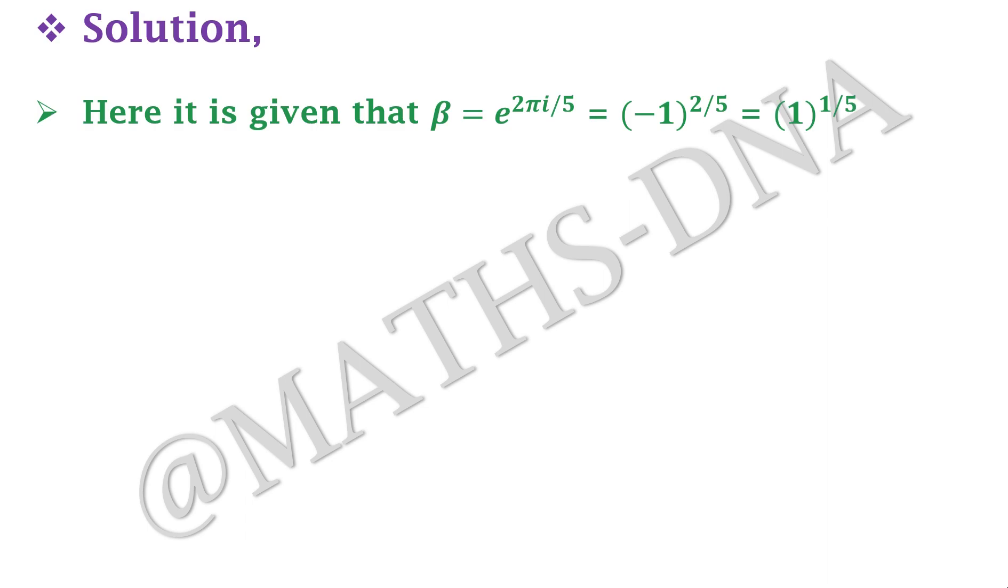It is given to us that β = e^(2πi/5) that is equal to (-1)^(2/5), e^(2πi) = -1, e^(πi), and that is equal to 1^(1/5). It gives us that β is the fifth root of unity, that is β⁵ = 1.